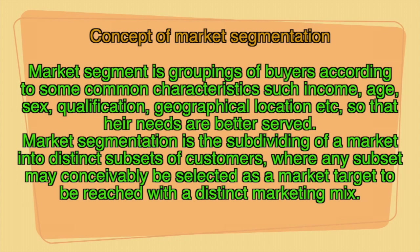For example, Fair & Lovely men's cream versus Fair & Lovely women's cream. There could be different characteristics of the market in terms of age, sex, qualification, and geographical location — northeastern market, rural market, urban market. Rural market needs are different, urban market needs are different, metropolitan market needs are different. Market segmentation is grouping buyers according to common characteristics such as income, age, sex, qualification, and geographical location so their needs are better served. By offering one single product, we cannot meet the requirements of all customers — adults need a different product, the young generation needs a different product, housewives might require different products, and working women might require different products.